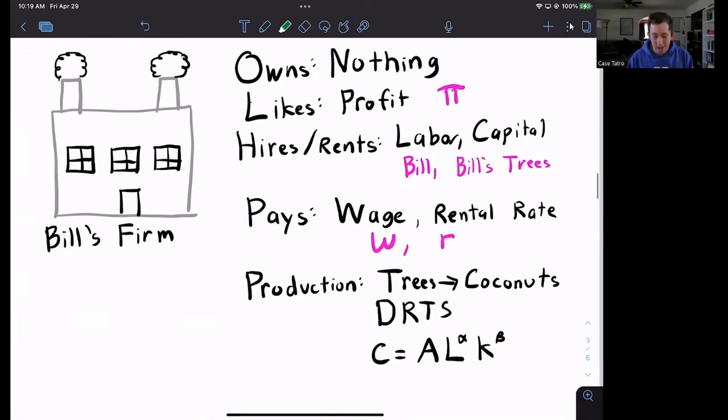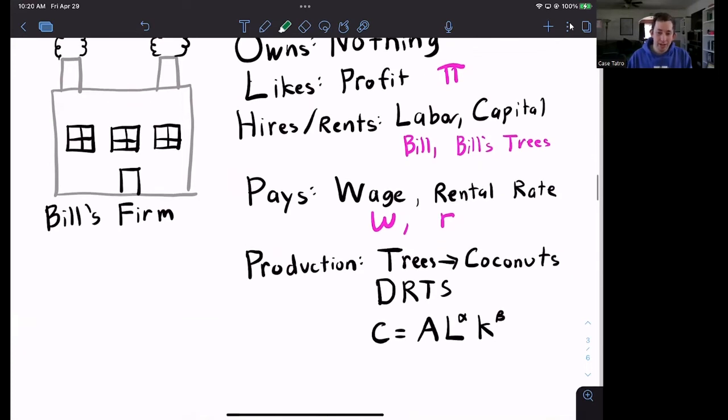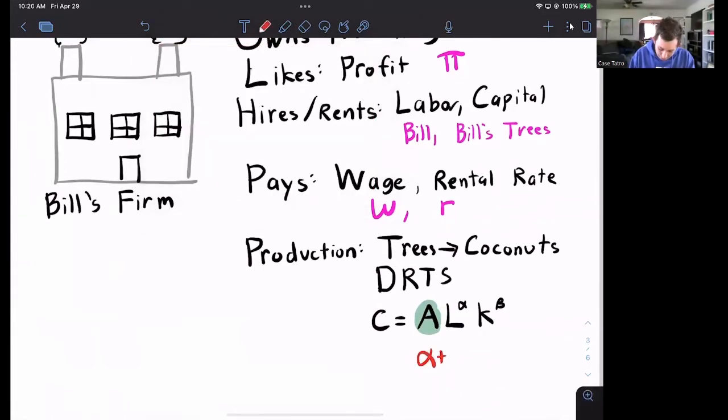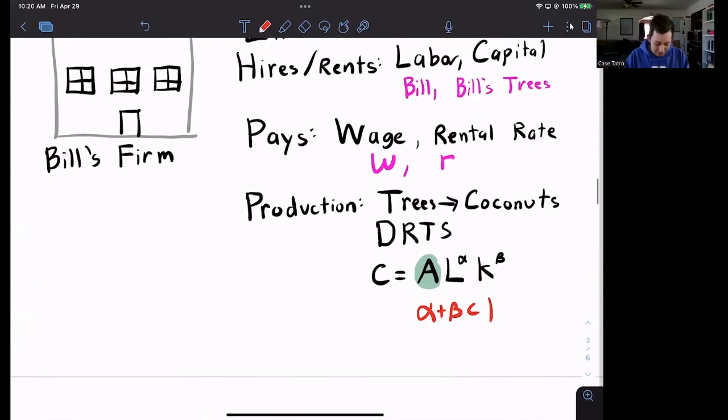We're going to have a production function that takes coconut trees and turns them into coconuts as well as labor. We're going to have a decreasing returns to scale function, and the production function is going to say that coconuts is some productivity factor A times labor times capital where we have alpha and beta. Because we're decreasing returns to scale, remember that this means that alpha plus beta is less than one. So here is our setup.